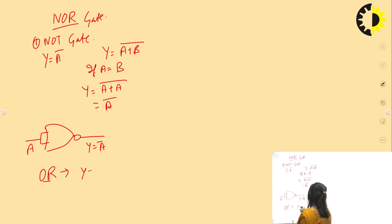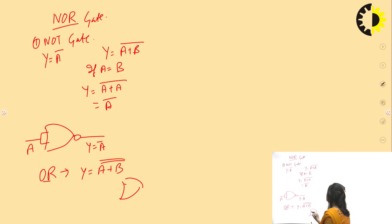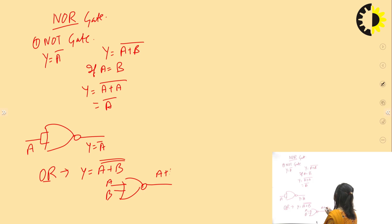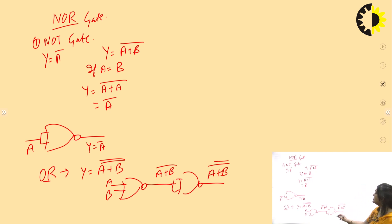For OR gate using NOR: the OR expression is Y = A + B. Apply double inversion — A and B feed into a NOR gate giving (A+B)̄, then pass through another NOR gate (inputs shorted) to get A + B. This is how we design the OR gate using NOR gates.